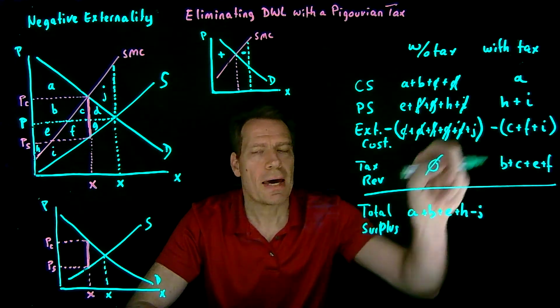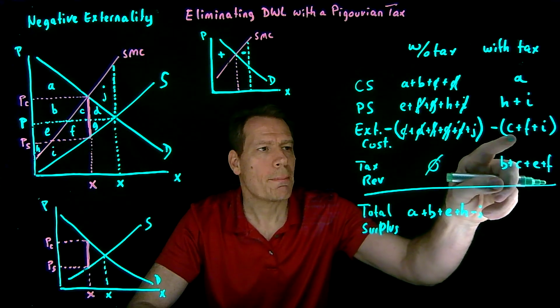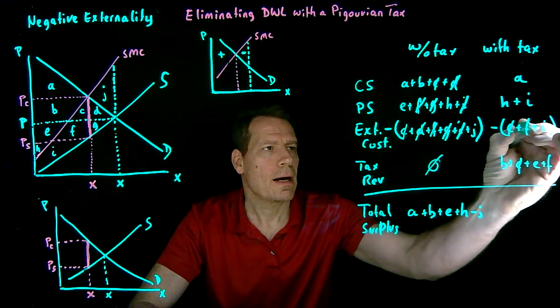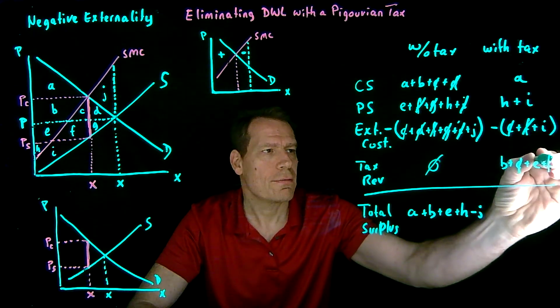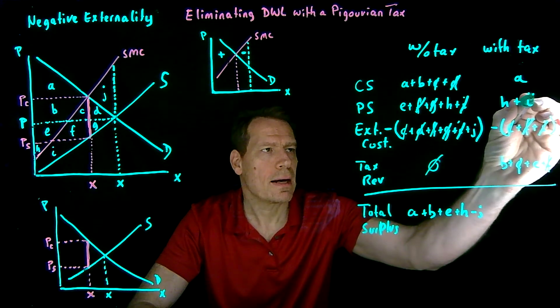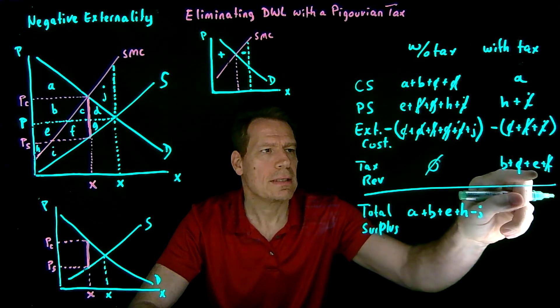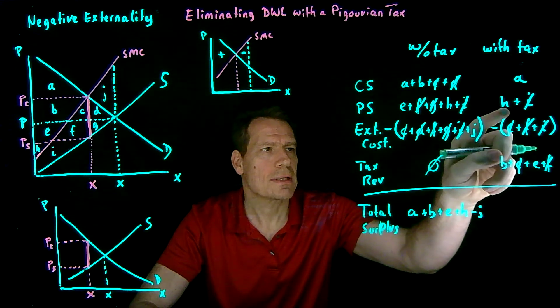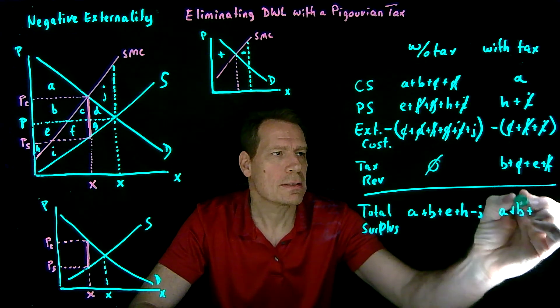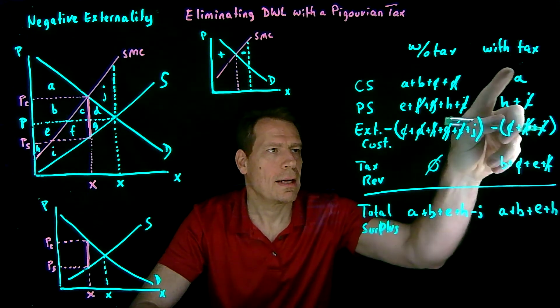What about with the tax? Well, with the tax we can cancel the negative terms. So we've got a minus C and a C, so we can cancel that. A minus F and an F. And a minus I and an I. So what we're left with is A plus E plus B plus H. So A plus B plus E plus H. And that's everything.